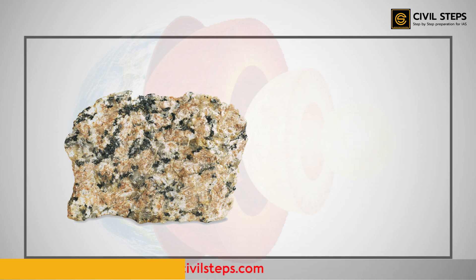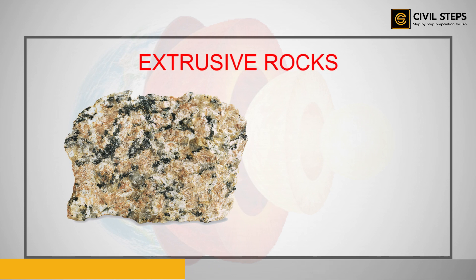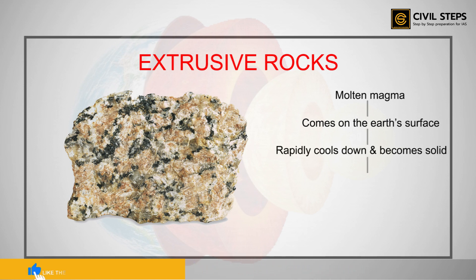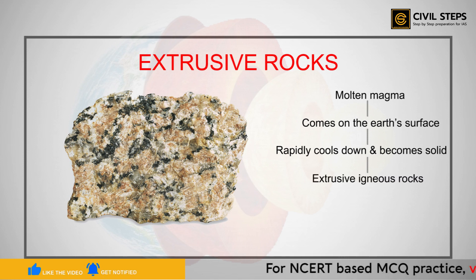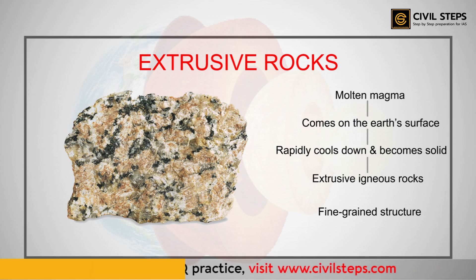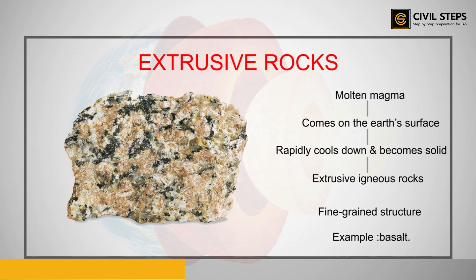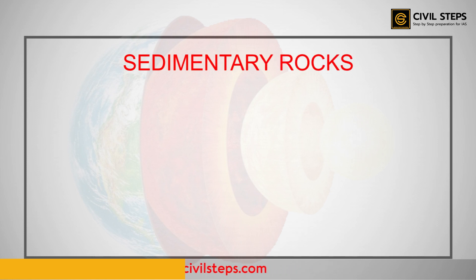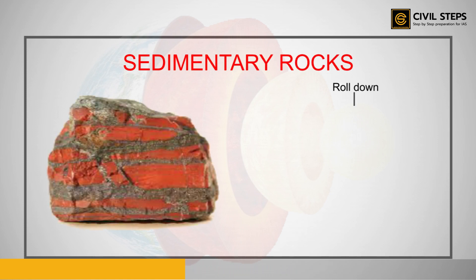When the molten lava comes onto the Earth's surface, it cools down rapidly and becomes solid. The rocks formed in such a way are called extrusive igneous rocks. An example of this type is basalt. Basalt rocks are found in the Deccan Plateau, which is made up of basalt.